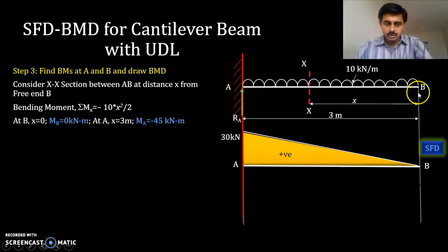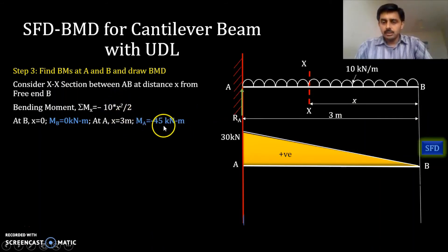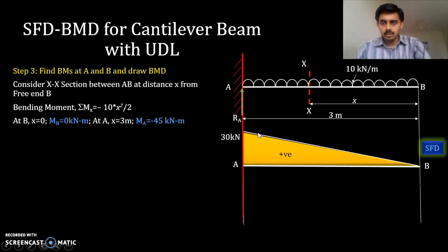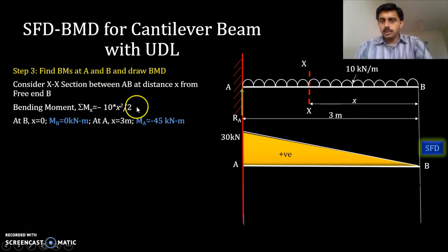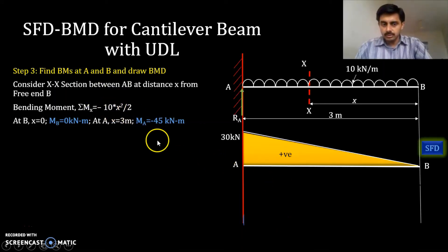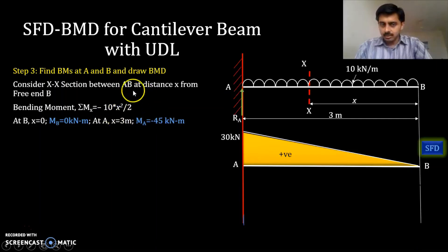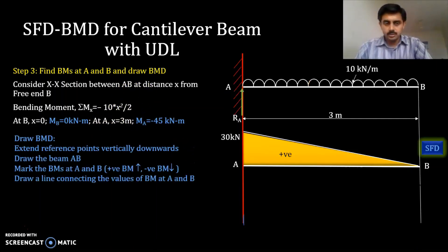At X = 0, that is at location B, the moment becomes 0. At X = 3 meters, that is at location A, substituting gives −10(3)²/2 = −45 kN·m. For easier drawing, the value at X = 1.5 meters (mid-span) can also be calculated. The bending moment shows a parabolic variation — the equation 10X²/2 is parabolic — and the negative sign means it is represented below the beam.